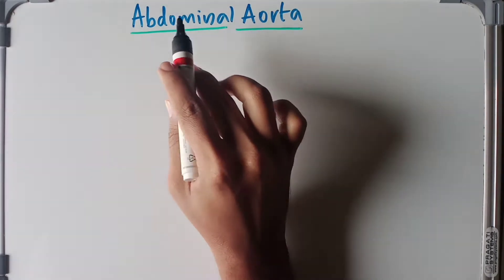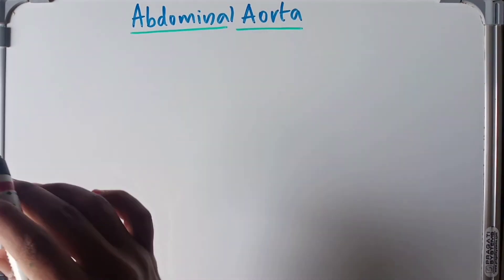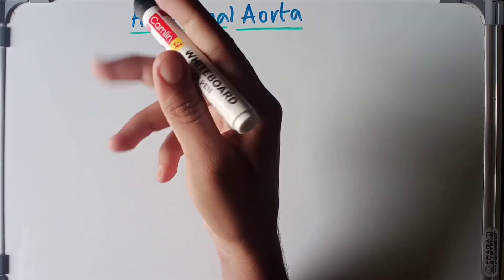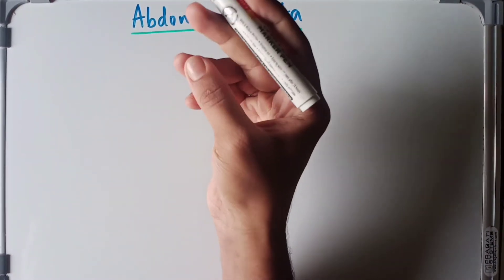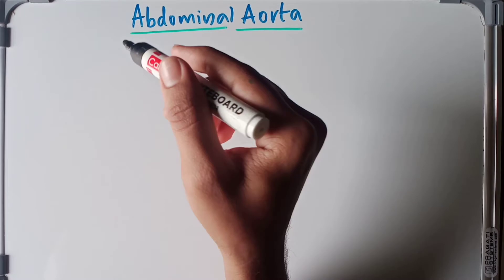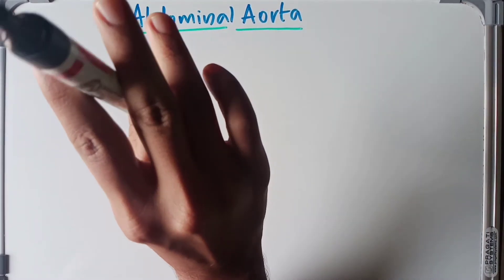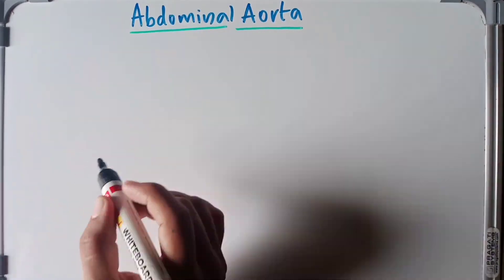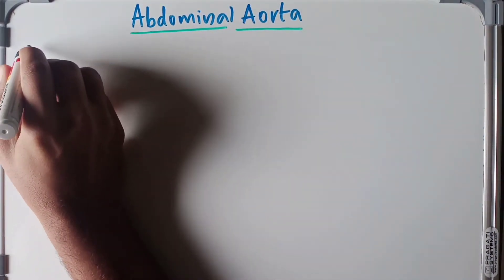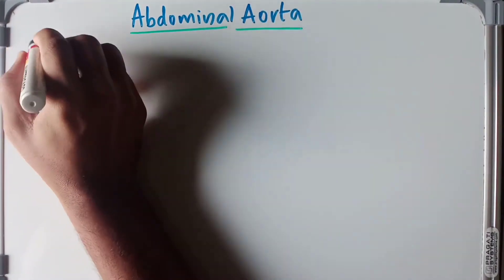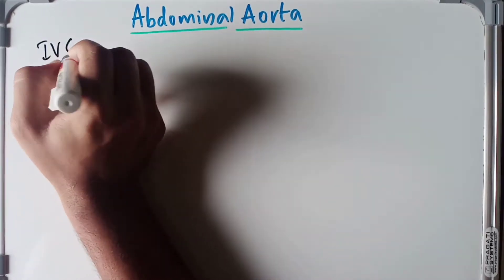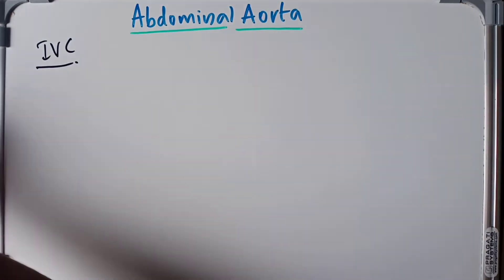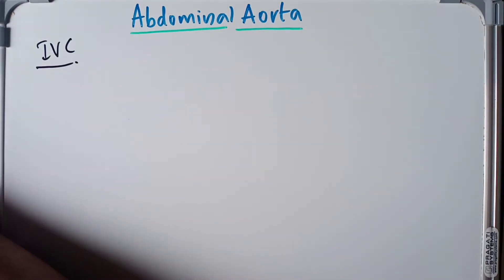First of all, we will be discussing about the abdominal aorta. Under the posterior abdominal wall and related structures, there are three fascias: the psoas fascia, fascia iliaca, and thoracolumbar fascia. We have discussed those fascias under different anatomy videos, so make sure to watch that. Along the posterior abdominal wall, we have two great vessels: the abdominal aorta and the inferior vena cava. We will discuss them under separate headings, and today we are going to discuss about the abdominal aorta.